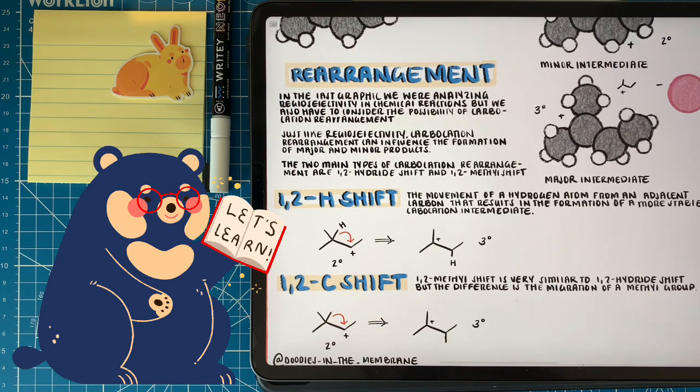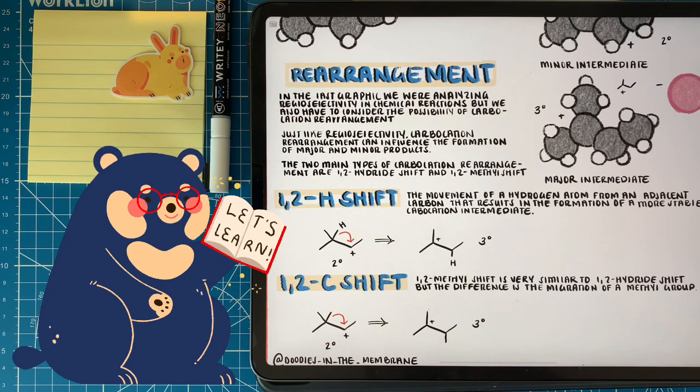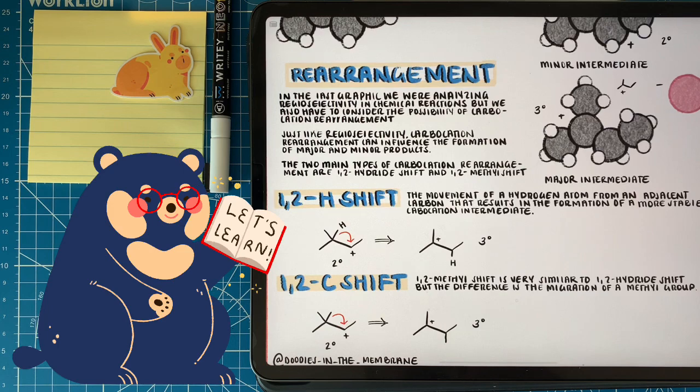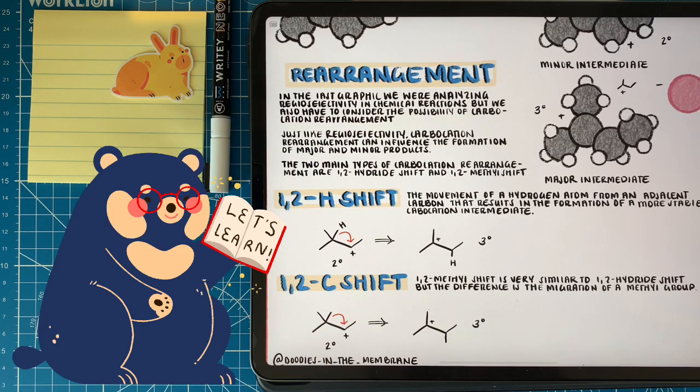If we have a 1-2 methyl shift, this is where we don't have an adjacent hydrogen to move, but we have an adjacent methyl group that we can move. By doing so, we also go from a secondary to a tertiary carbocation.